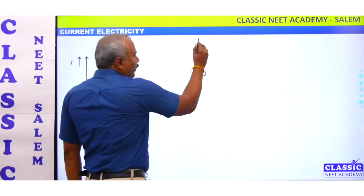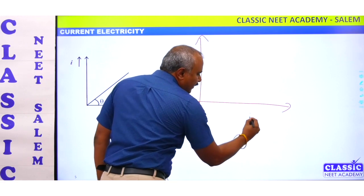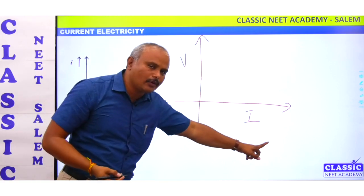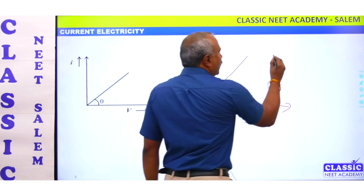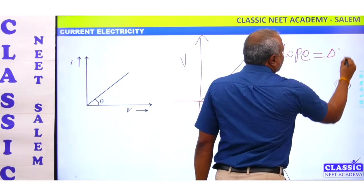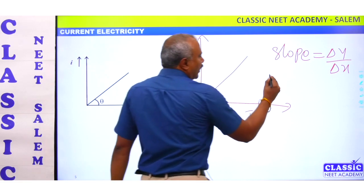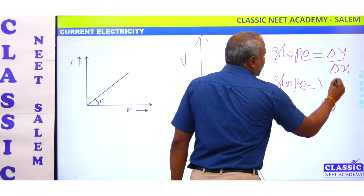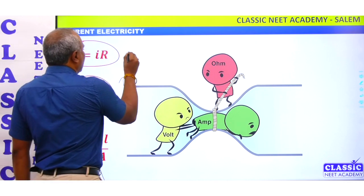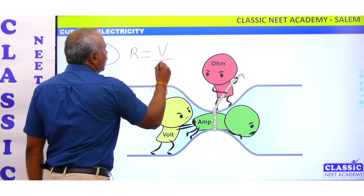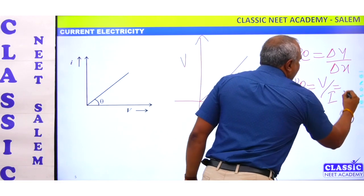What is the concept? Let's look at this. We have voltage on the x-axis and voltage on the y-axis. We have a slope. What is the slope? Change in y-axis by change in x-axis. So the slope is V by I. We have seen that V by I — R equals V by I. That is called resistance. So the slope is equal to resistance.